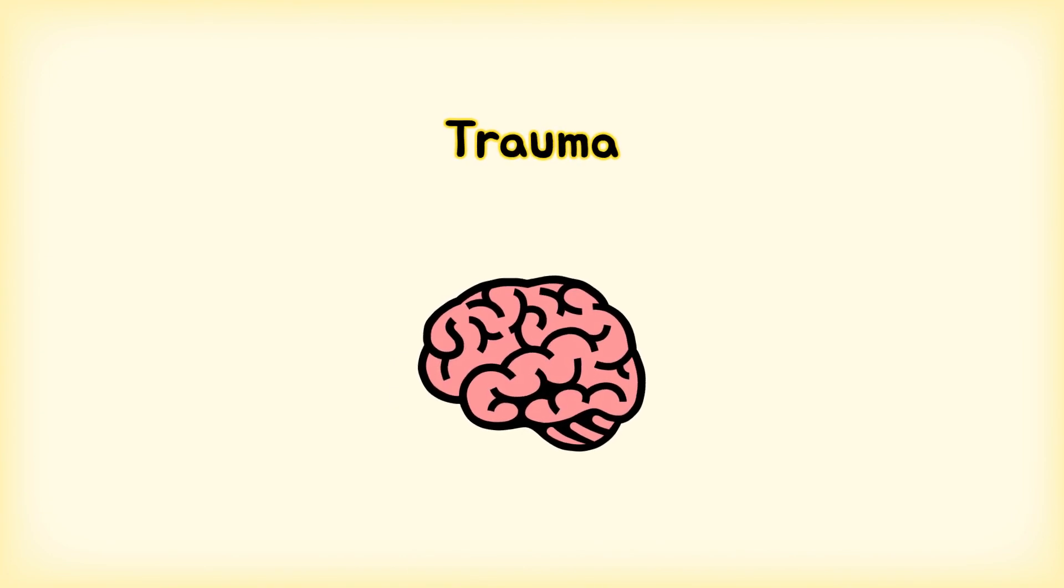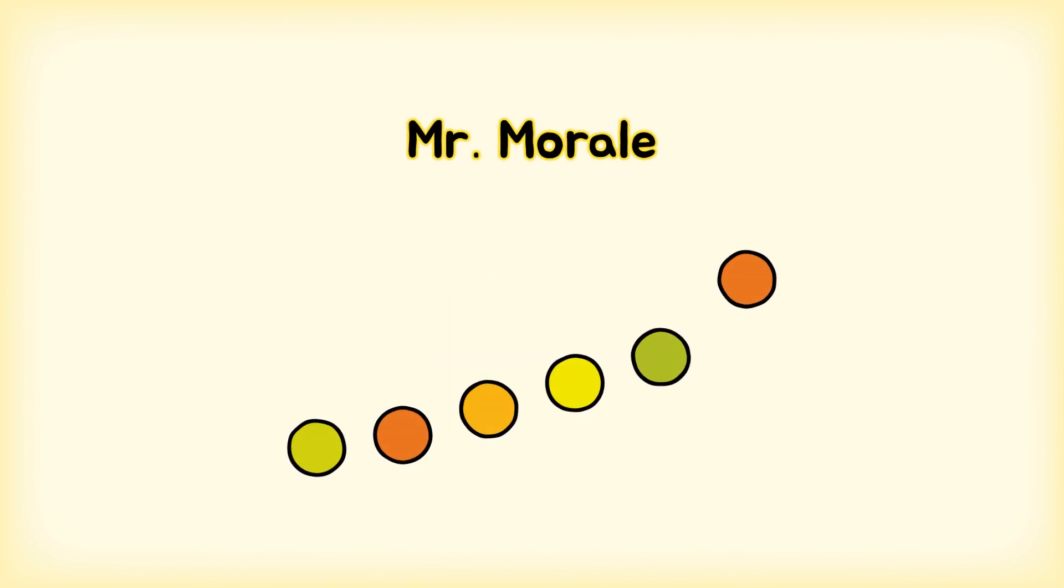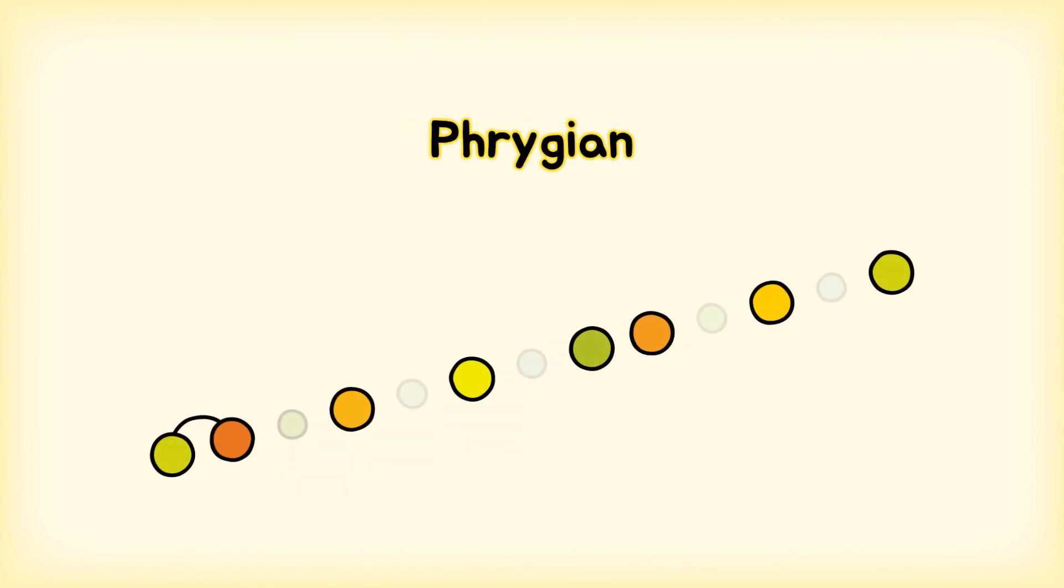Number 9. On Mr Morale, lyrics about fighting demons and coping with trauma are complemented by the music. The intro contains claustrophobic breathing over a pulsating bass and an ominous synth harp. This part owes its distinctive sound to the one semitone interval that begins the Phrygian mode.